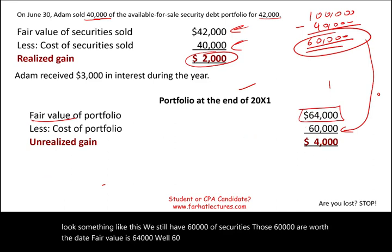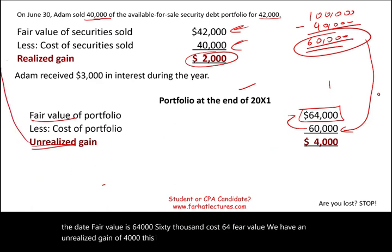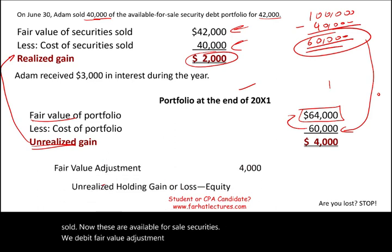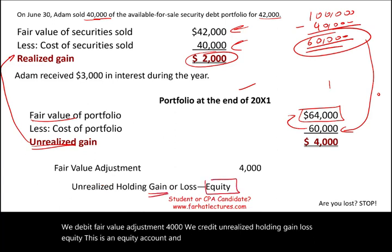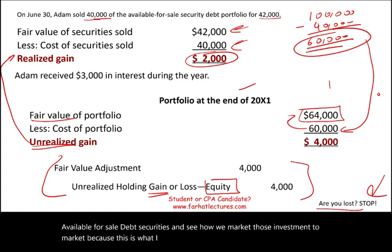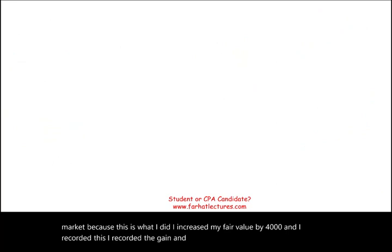This is unrealized versus the realized gain from what we sold. For available for sale securities, we debit fair value adjustment $4,000 and credit unrealized holding gain/loss equity $4,000. If you don't know how to do this entry, go to the available for sale debt securities video. I increased my fair value by $4,000 and recorded the gain in unrealized holding gain equity.